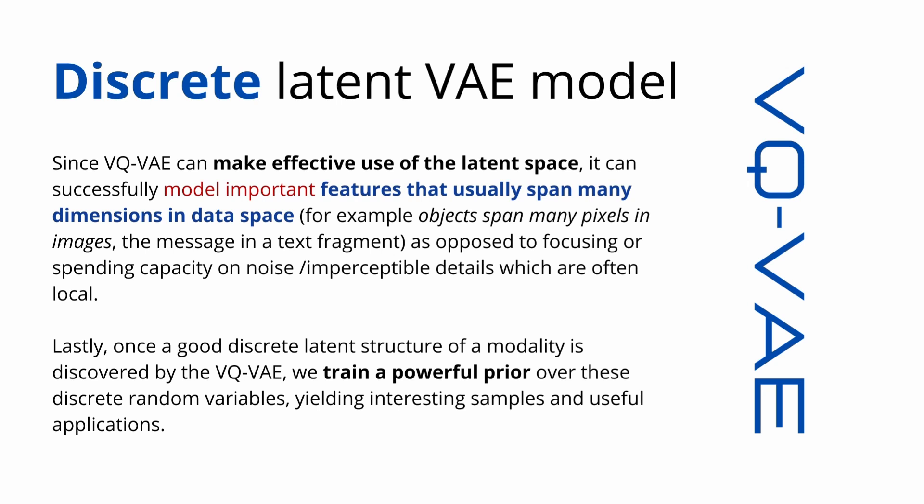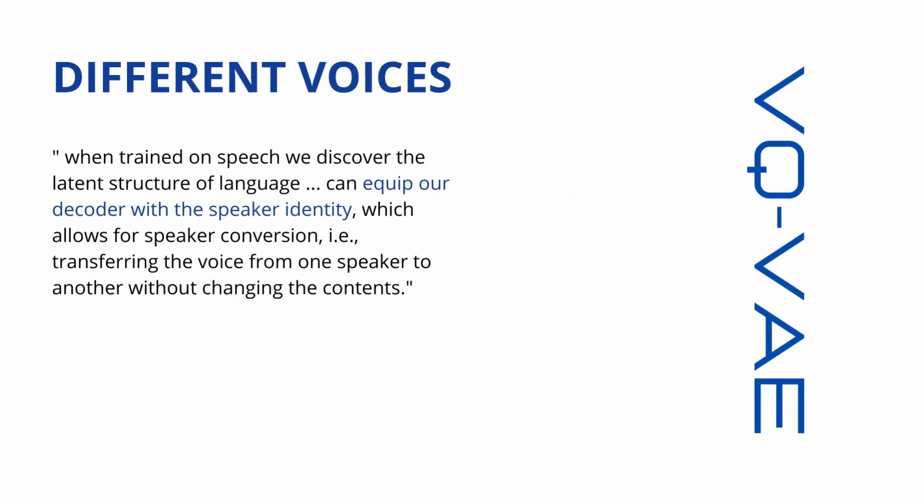Once a good discrete latent structure is discovered by our vector quantized model, we train a powerful prior over these discrete random variables, yielding interesting samples and useful applications. If you apply this to voice, for example, you can have different voices — you can discover the latent structure of language and equip your decoder with a speaker identity.